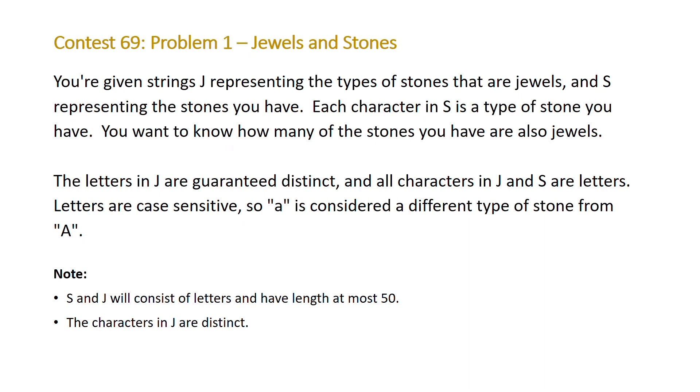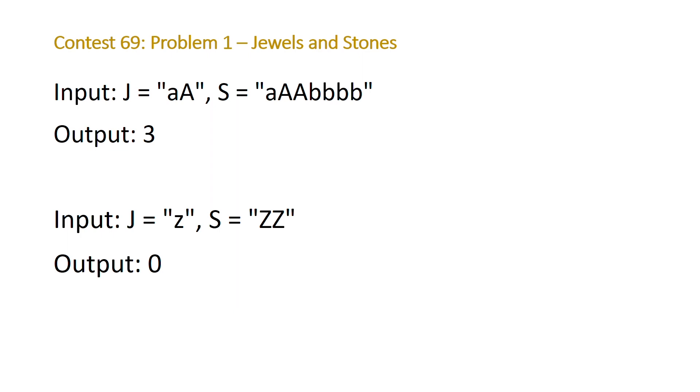Let's take a look at the examples that the problem provides us with. We're given two examples. The first one says that our string J is lowercase 'a' uppercase 'A', meaning we have two jewels, and the string which represents the stones that we own has three a's and four b's. So we should return three, which is equal to the number of jewels, the three a's.